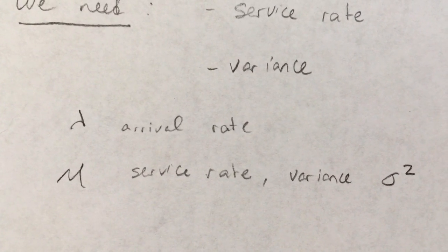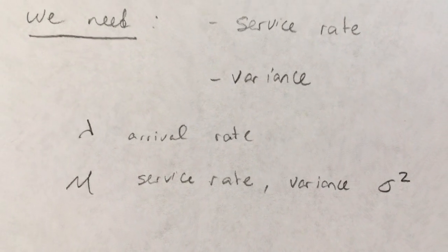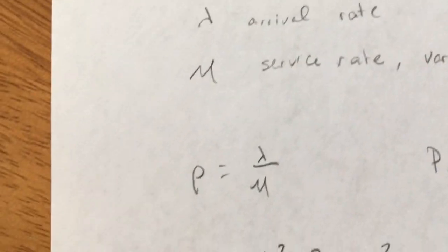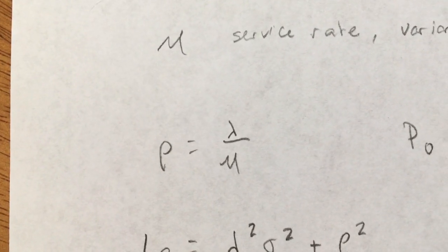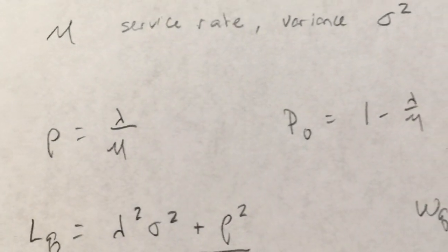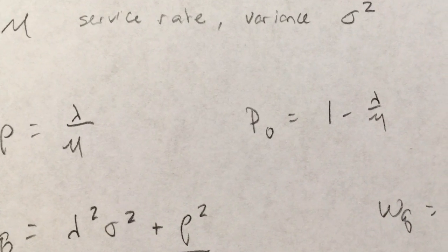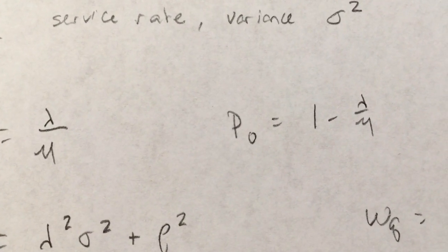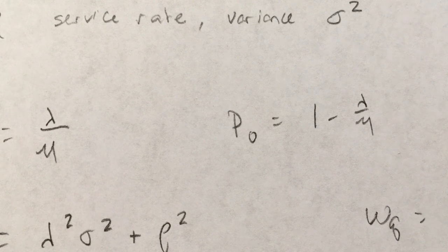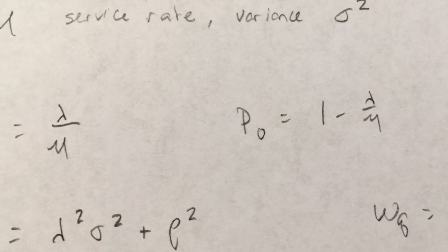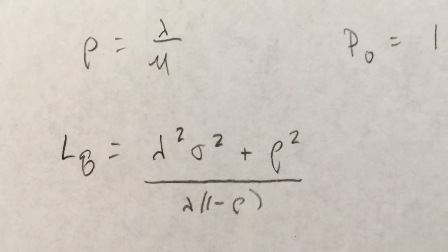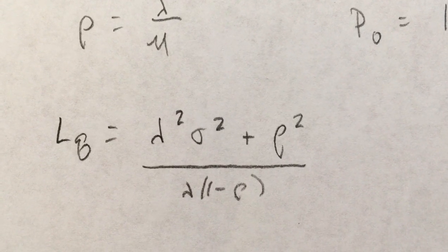So how do the equations work on this? We still have your utilization rate of lambda over mu. That hasn't changed. And our P_0, our probability of being in state zero, is still one minus lambda over mu. But L_Q a little bit different. Now we are taking into account the variance as well.